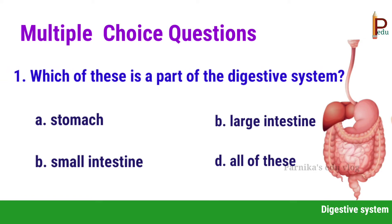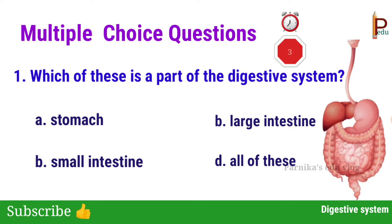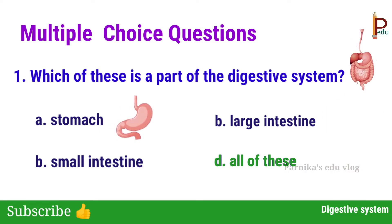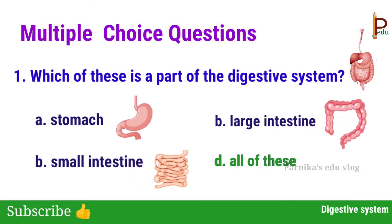First one: which of these is a part of the digestive system? The answer is D — all of these — because stomach, small intestine, and large intestine all are parts of the digestive system.